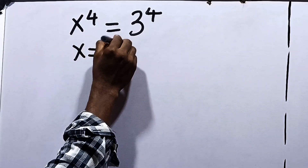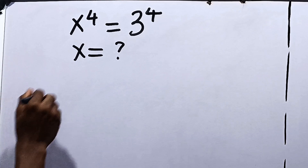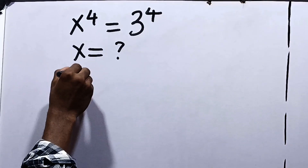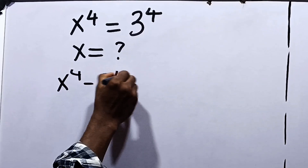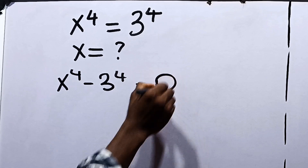First things first, we can say from here that we have x raised to the power of 4 minus 3 raised to the power of 4 to be equal to 0.